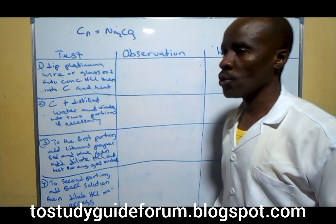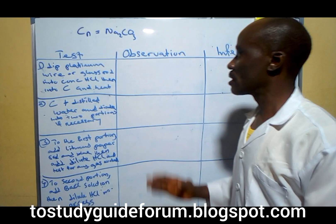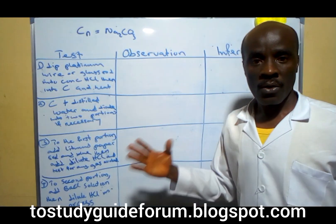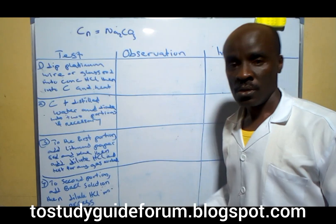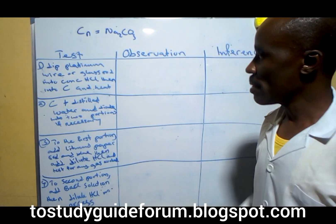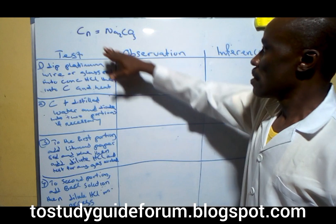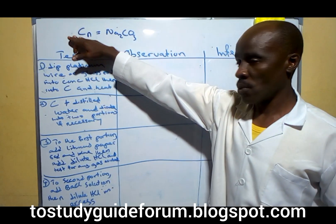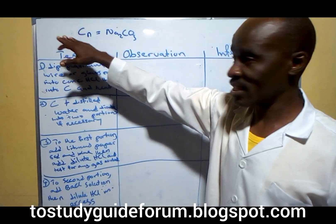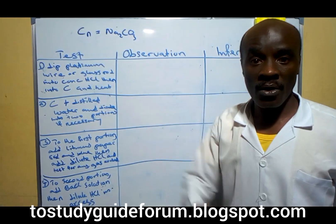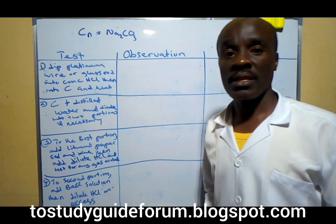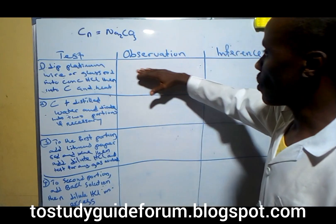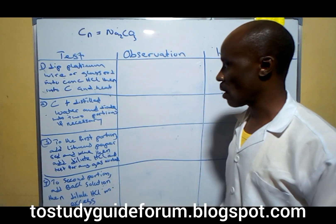This time we're going to be looking at a test in preparation for the coming exam. What we have here is Sodium triosocarbonate, which will be tagged C, and N will be the name of the candidate index number. So this is the possible test we are looking at here now.